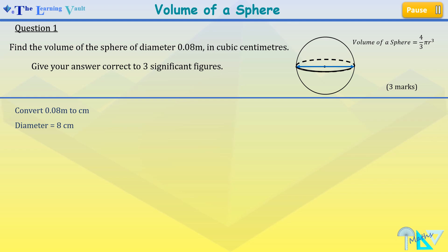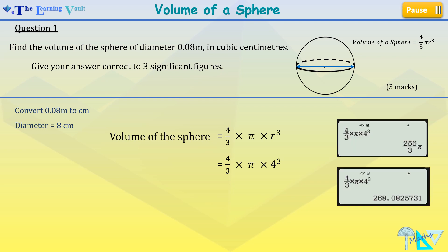Now we've been told that the volume of the sphere is 4 over 3 times pi times r cubed. So we're going to use this formula because our radius now is 4 since the diameter is 8. So we type that in our calculator and convert it to decimal. So our answer is 268.0825731.